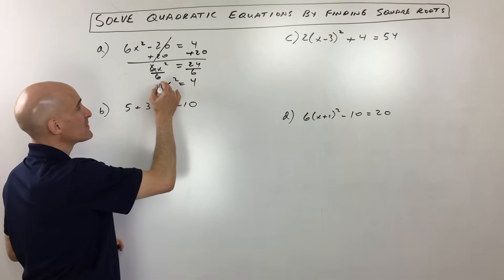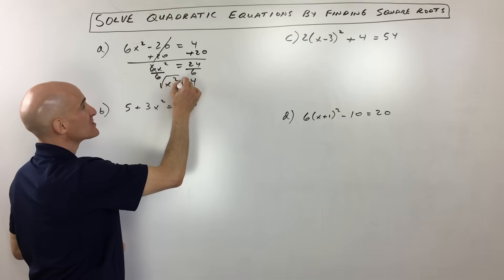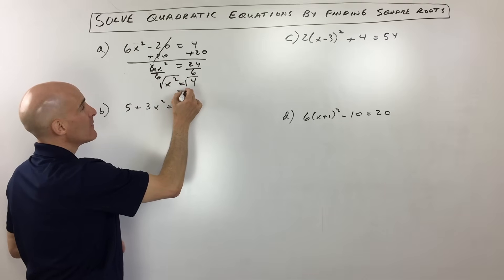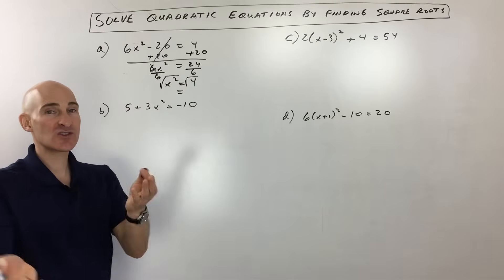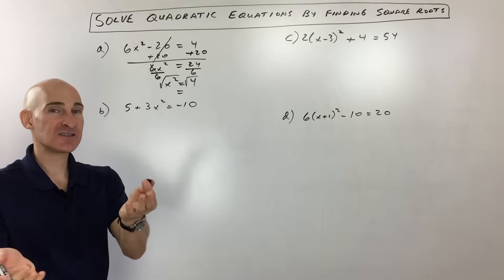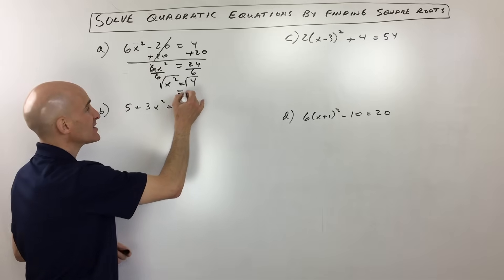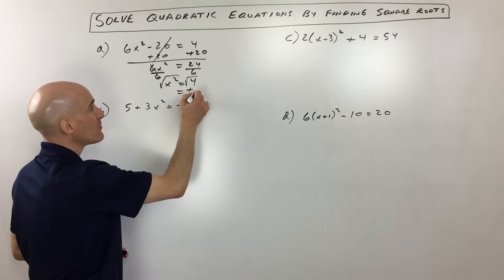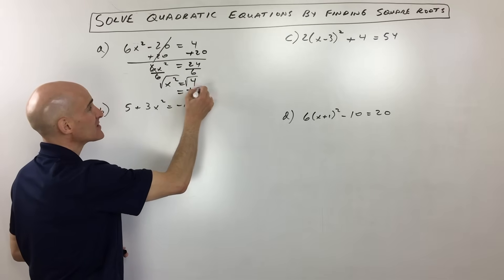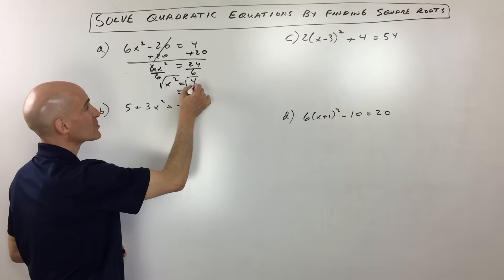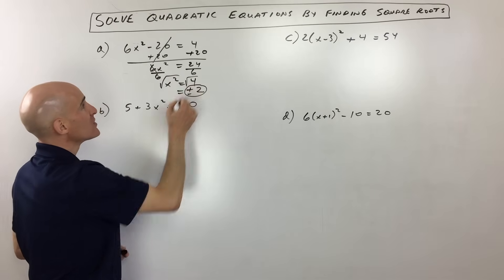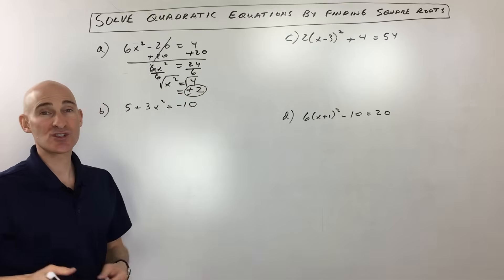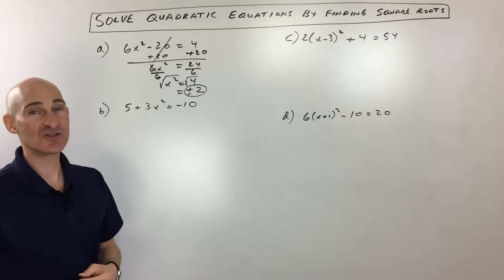We want to do the opposite of squaring, which is to take the square root of both sides. But remember, when you take the square root of both sides of the equation, you actually get two answers — plus or minus — and the square root of 4 is 2. So those are our solutions: positive or negative 2.